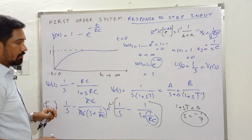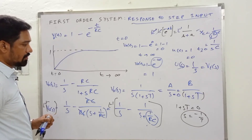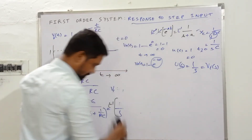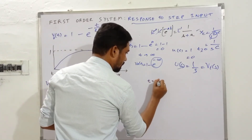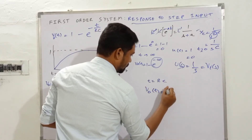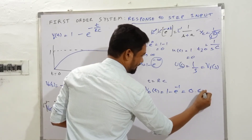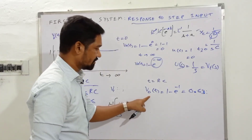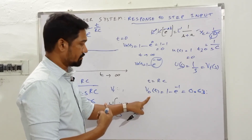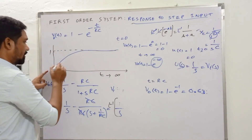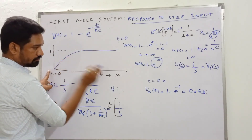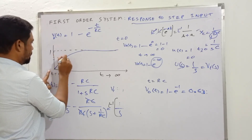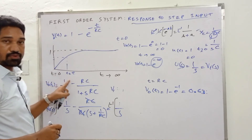An important point often forgotten: when t = RC (i.e., t equals the time constant τ), v_out = 1 − e^(−1) ≈ 0.63. This means the response reaches 63% of the final value at t = τ = RC. This is the definition of the time constant of the circuit — the time taken by the response to reach 63% of its final value.